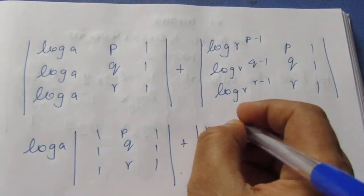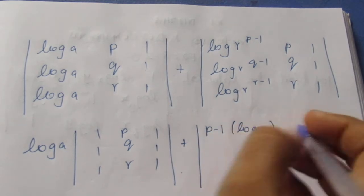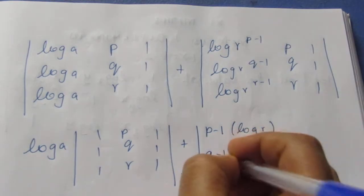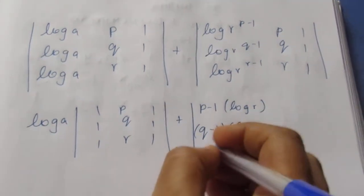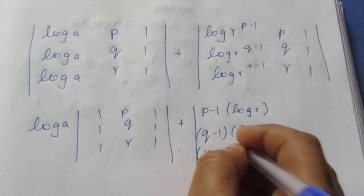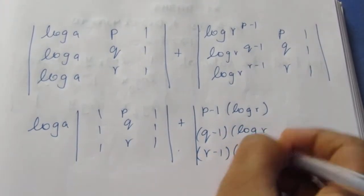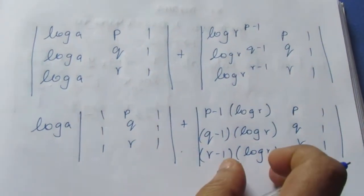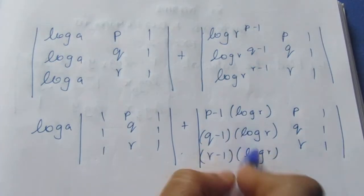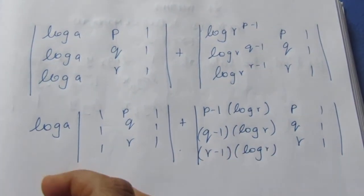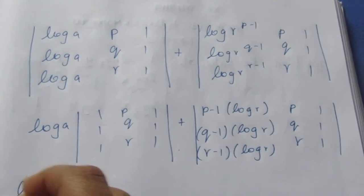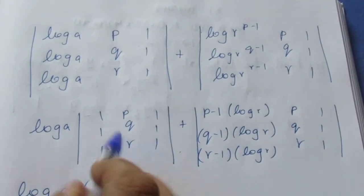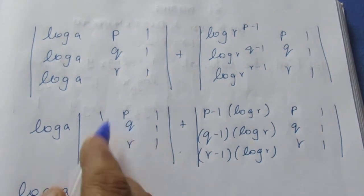This gives us log a times the determinant with first row 1, 1, 1 plus log r times the determinant with first row (P−1), (Q−1), (R−1); second row P, Q, R; third row 1, 1, 1. We can take log r common from the column.